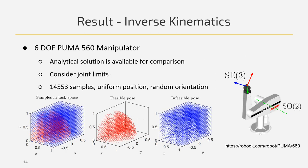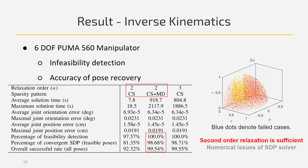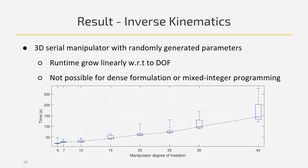We verify the sparse polynomial optimization method on inverse kinematics problems that have analytical solutions. We take samples in the task space with random orientations. We find that second-order relaxation is sufficient to provide infeasibility detection for all infeasible cases and accurate pose recoveries for almost all feasible cases, though a small number of failed cases remain due to numerical issues. Testing on randomly generated manipulators confirms that the proposed algorithm has linear time complexity, which is favorable compared with other methods.